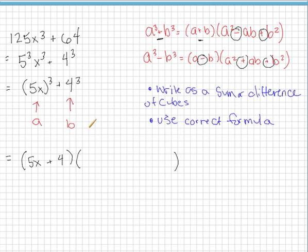Our A is 5X, but we're squaring that. So we're going to have 5X squared minus the opposite sign. A times B, 5X times 4, plus, third sign is always a plus, B squared, so 4 squared.